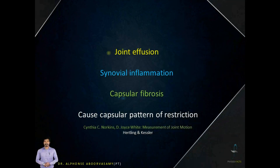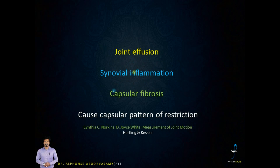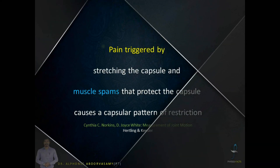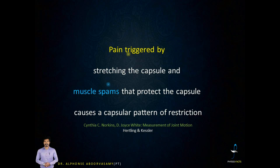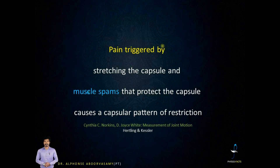The causes for involvement of a joint capsule include joint effusion and synovial inflammation leading to capsular fibrosis. It can be seen in conditions like traumatic inflammation, infectious conditions, rheumatoid arthritis, or gout arthritis. When we try to move a joint that is already inflamed, it may trigger pain, and to prevent that movement, muscle spasm develops in a reflexive way, and this protective muscle spasm leads to the creation of the capsular pattern of restriction.